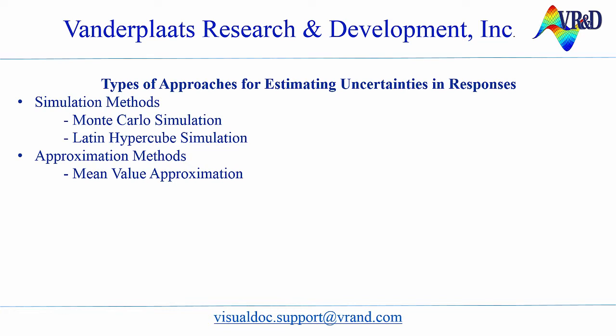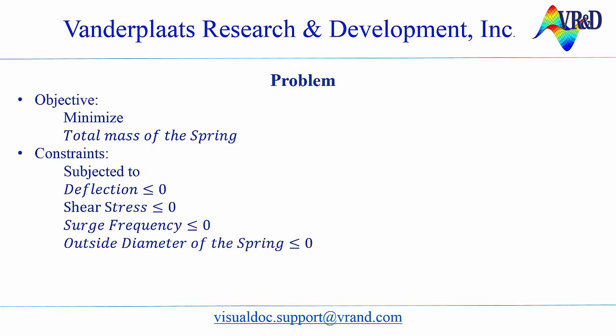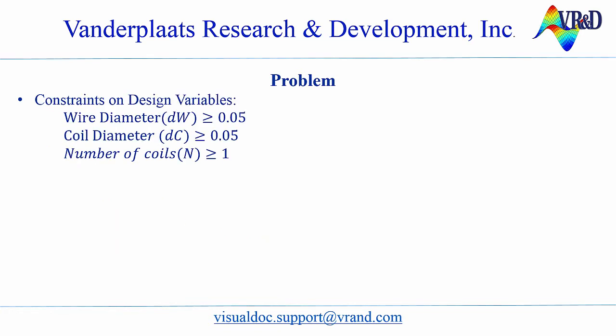Finally, I will compare the results obtained. The design objective is to minimize the mass of the spring, satisfying constraints on deflection, shear stress, surge frequency, and outside diameter of the spring. Note that all constraints are normalized. Constraints on design variables are: wire diameter and coil diameter should be greater than or equal to 0.05 inches, and the number of coils should be greater than or equal to 1.